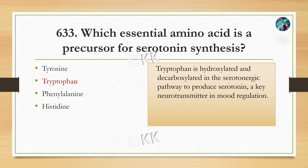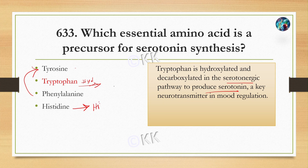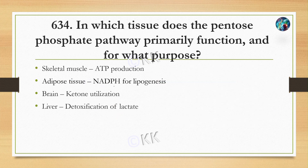Serotonin is a neurotransmitter that regulates our mood. Tyrosine and phenylalanine are related to other pathways, and histidine is the precursor for histamine, which is associated with allergic reactions. Now let's move to the next question.